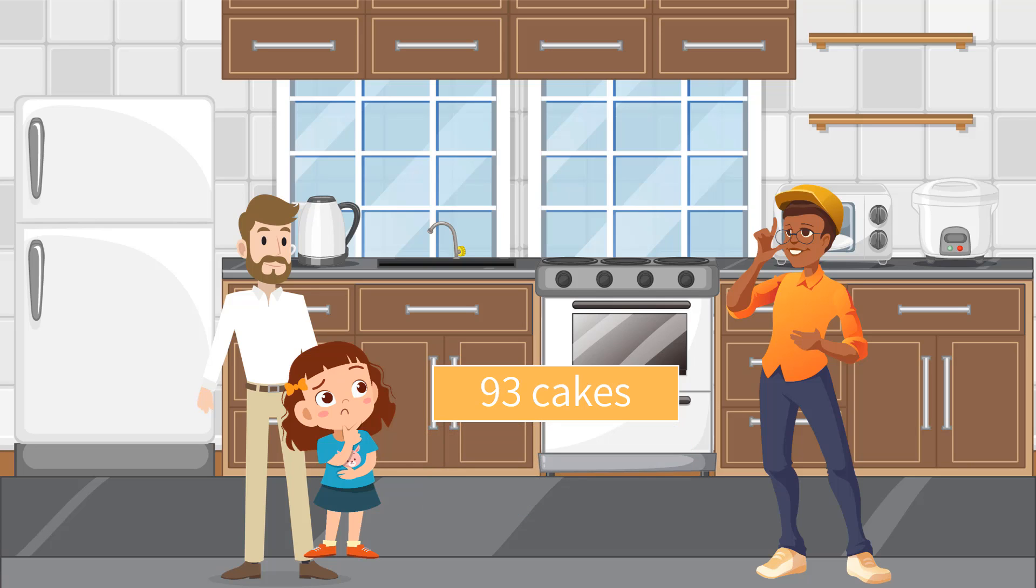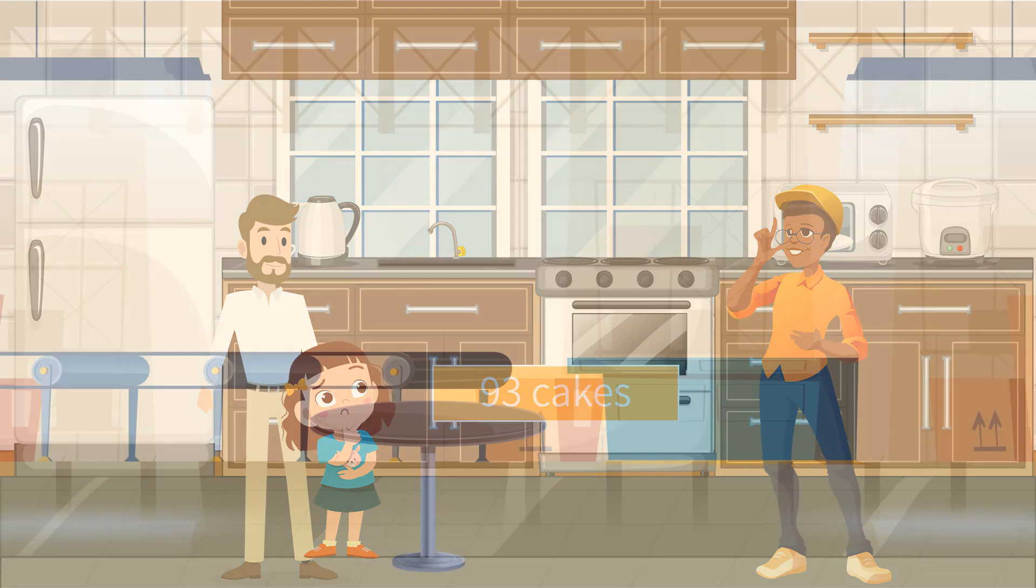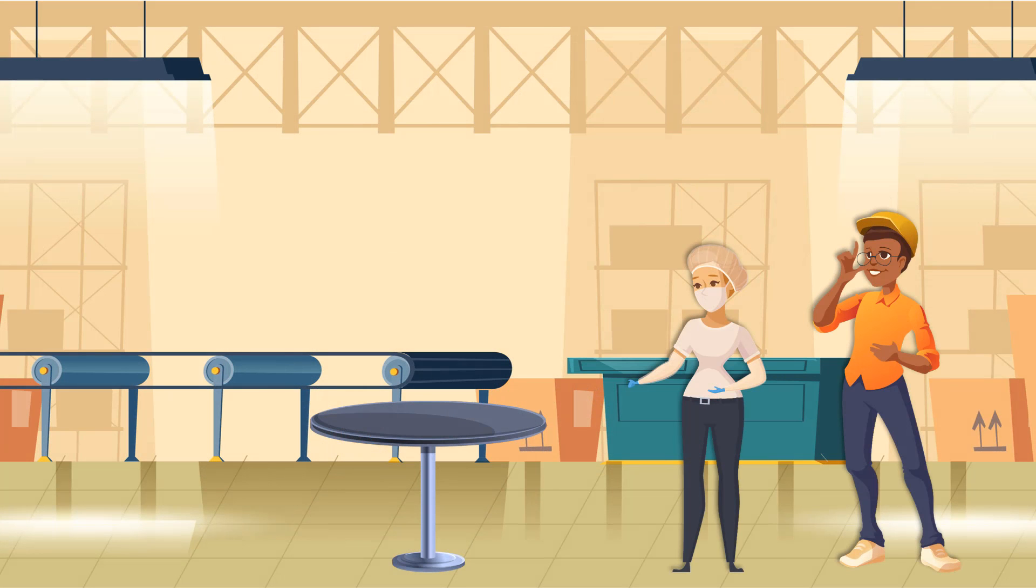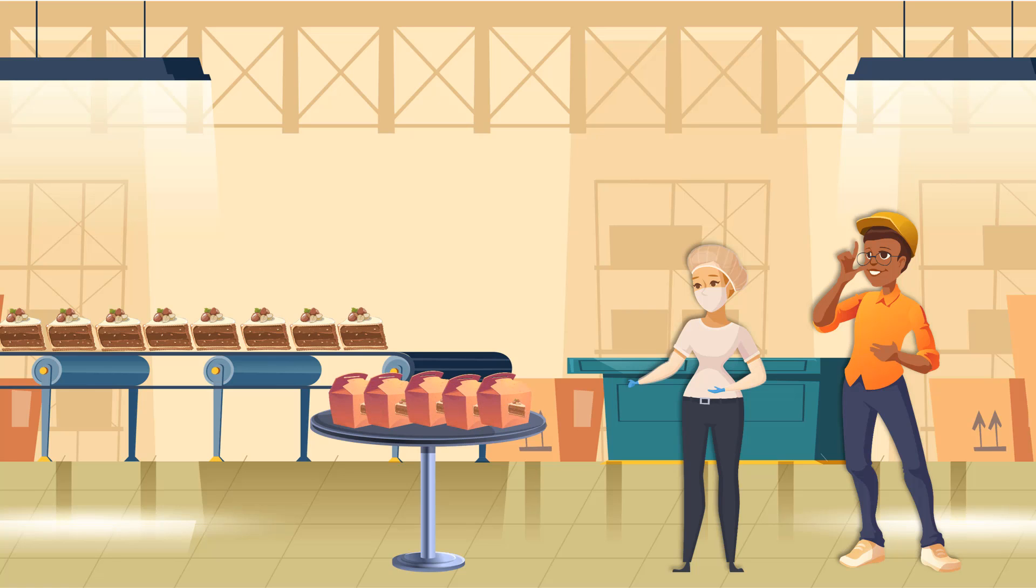The vendor company decided to pack all the cakes in boxes. They counted the number of cakes and found there were 3,218 cakes in all. According to their marketing research, the best number of cakes in a box was 24. They decided to pack the cakes in boxes, 24 cakes in each.